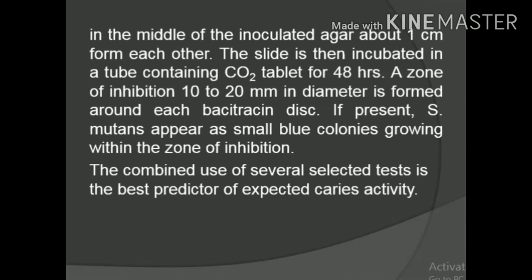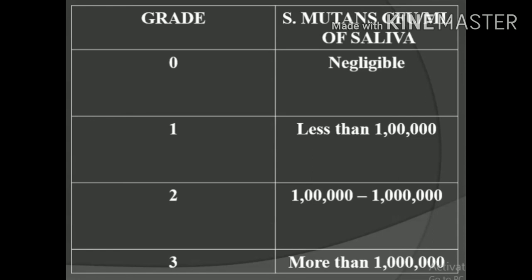The combined use of several selected tests is the best predictor of expected caries activity — no single test can declare a person caries susceptible or not. A combination of tests is needed to arrive at a conclusion. Grading: 0 = negligible S. mutans colony-forming units per ml; 1 = less than 1 lakh (100,000) colonies; 2 = 1 lakh to 1 crore; 3 = more than 1 crore.